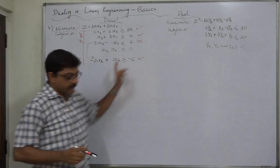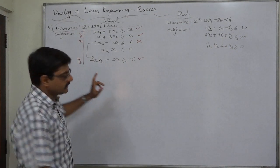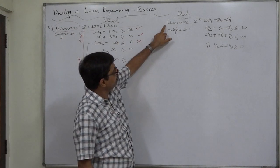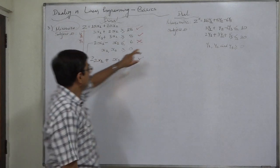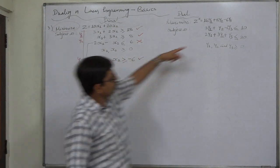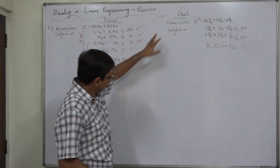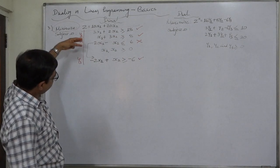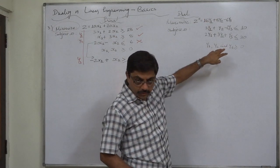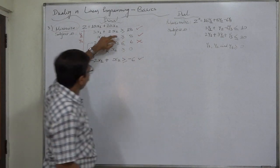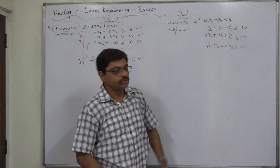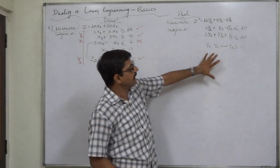This is the dual of this primal. Let us check: objective of primal is minimize, objective of dual is maximize. Two decision variables in the primal, two constraints in the dual. Three constraints in the primal, three decision variables in the dual. All constraints in the primal have greater than or equal to sign; all constraints in the dual have less than or equal to sign. So this is the correct dual.